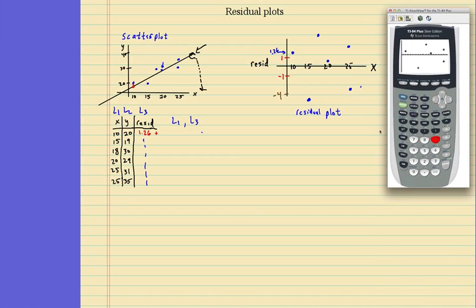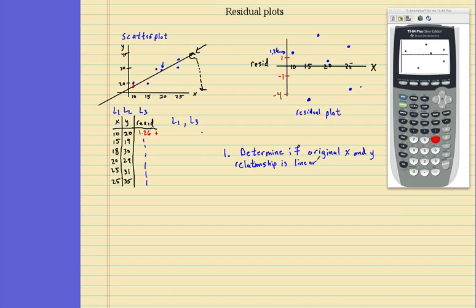And this is a great example of when we could tell if a scatter plot is linear or not. That's what we use these for. We use residual plots. One use is to determine if original X and Y's, if the original X and Y relationship is linear. And the way you determine that, if there's no obvious patterns, then yes, it's linear.